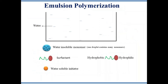Although bulk and solution polymerization are very simple methods to make polymers, these methods have certain limitations: it is not possible to get high molecular weight polymers, polydispersity is very high, bulk polymerization is exothermic, and solution polymerization is not environmentally friendly. Emulsion polymerization is one way to overcome these limitations.